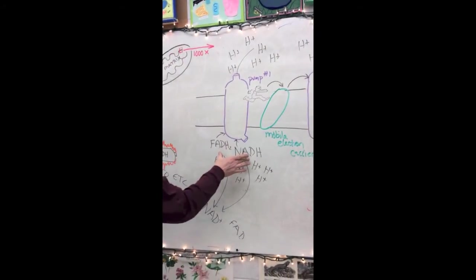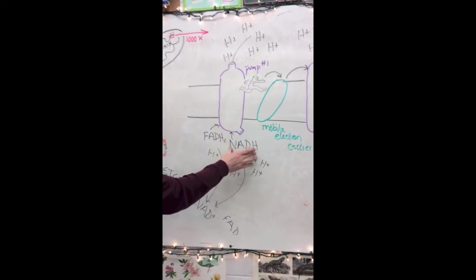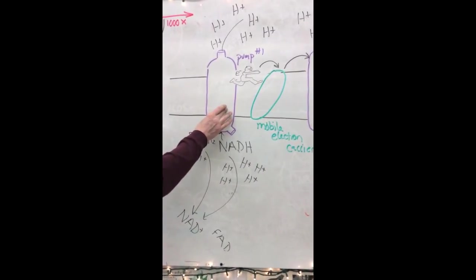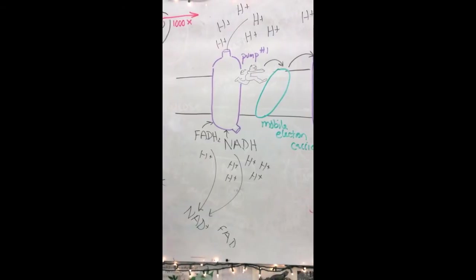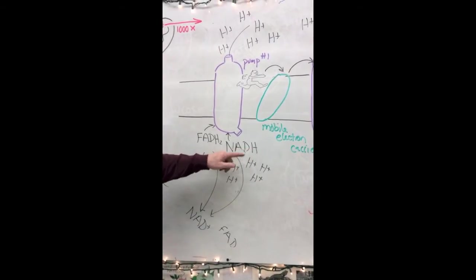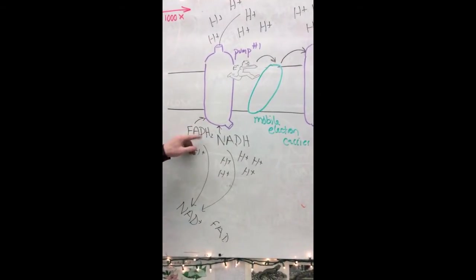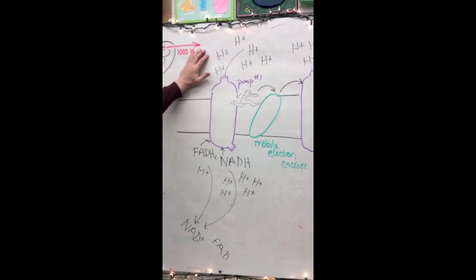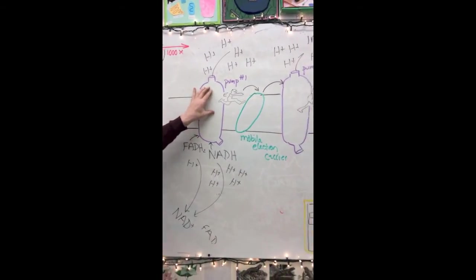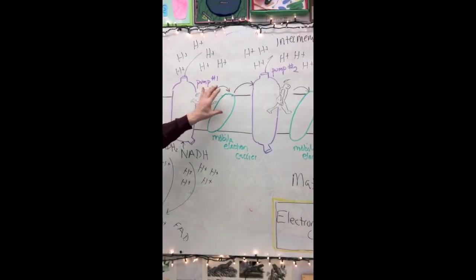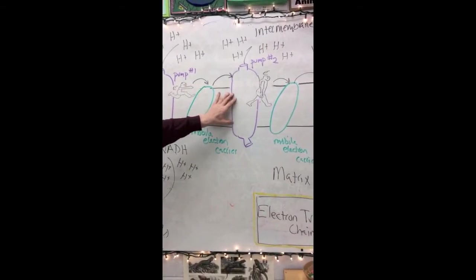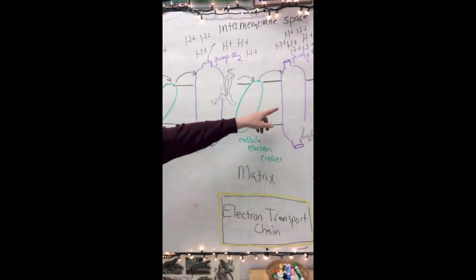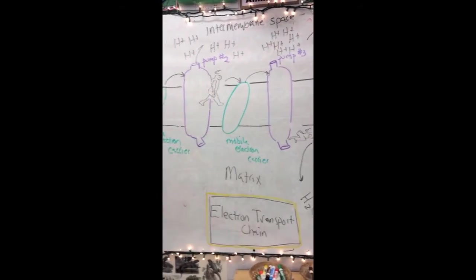The high energy electron, or high energy molecules NADH and FADH2 interact with the first of three protein pumps and cause hydrogen which is stripped from the NADH and FADH2 to flow into the intermembrane space. The high energy electron is moved first to one protein pump via an electron carrier, and then to another proton pump with another mobile electron carrier.